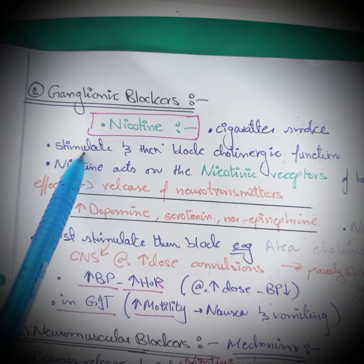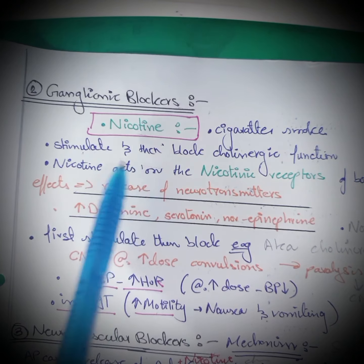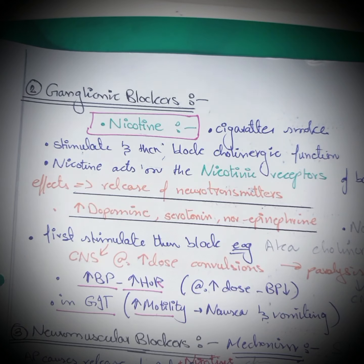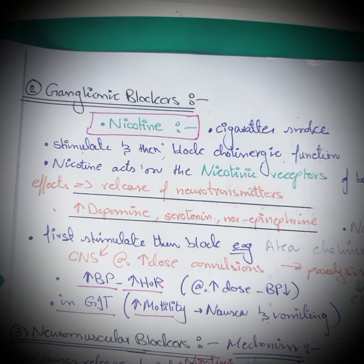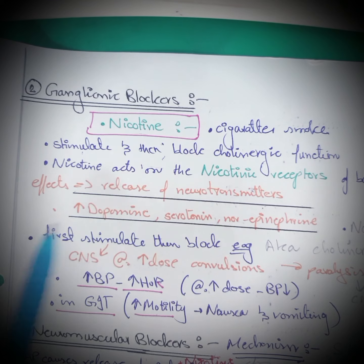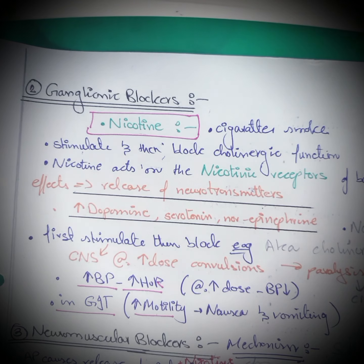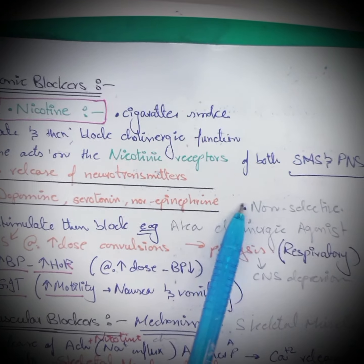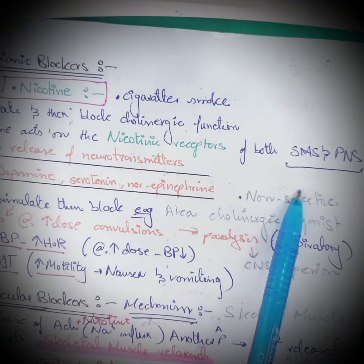The first ganglionic blocker we will discuss is nicotine, which is the main content of cigarette smoke. Depending on the dose, nicotine depolarizes the autonomic ganglia, resulting first in stimulation and then paralysis of all ganglia. The stimulatory effects are complex, resulting from increased release of neurotransmitters such as dopamine, serotonin, and epinephrine.